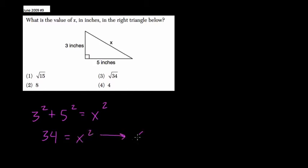But x then is going to be equal to the square root of 34. And that's not a perfect square, and you can try and break it down, right?